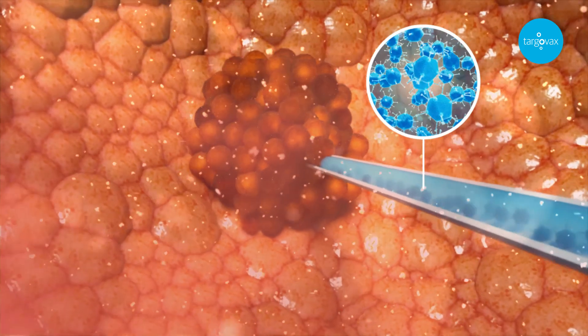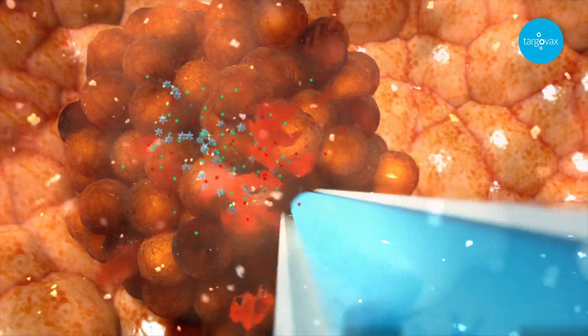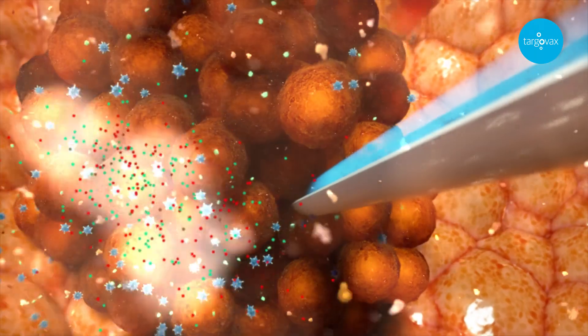Injection of Oncos102 into the tumour creates danger signals which drive the production of inflammatory cytokines that activate the immune system and trigger an innate immune response.